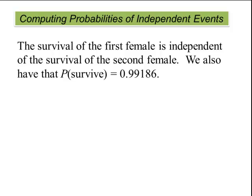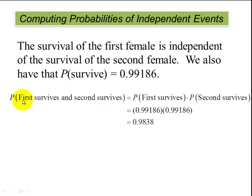If we use our multiplication rule, we can compute this probability. The probability that the first one survives and the second one survives is equal to the probability the first one surviving times the probability that the second one survives. So that's 0.99186 times 0.99186, or really 0.99186 squared, which is 0.9838.